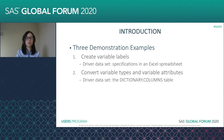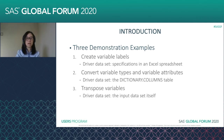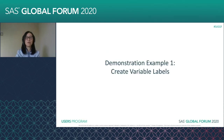Second, we are going to convert variable types and attributes at the same time. The driver dataset in this example is one of the SAS dictionary tables. The last example, we are going to transpose a number of variables, and this time we're going to use external data to drive the programming. The driver dataset is from the input dataset itself. Now, without further ado, let's look at our first example.